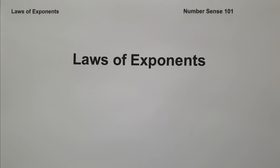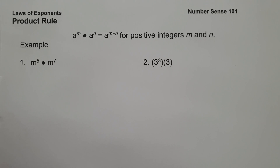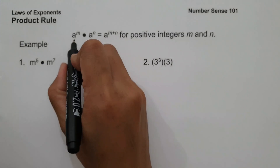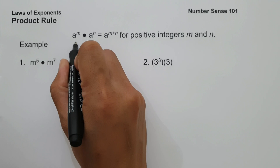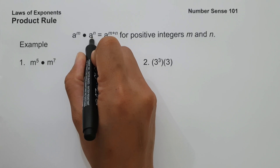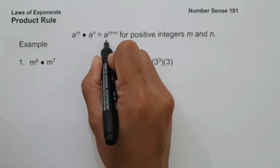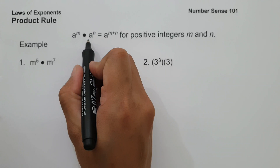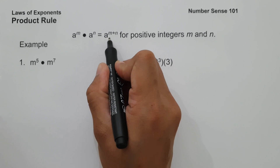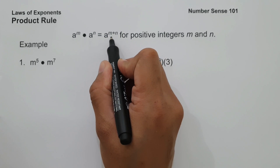Let's start. The first law is the product rule. When we say product rule, if we have a raised to m multiplied by a raised to n, where a is a base and m and n are exponents, it will give us a raised to m plus n for positive integers m and n. Basically, when multiplying integers with the same base, all you have to do is copy the base and add their exponents, that is m plus n.